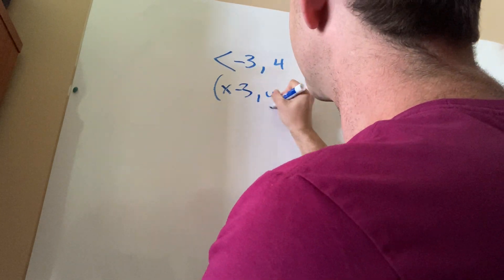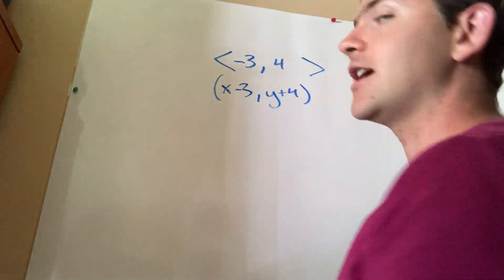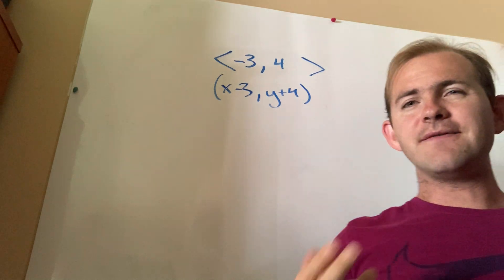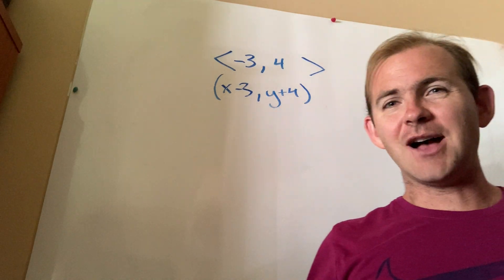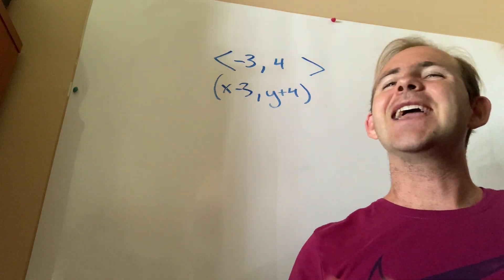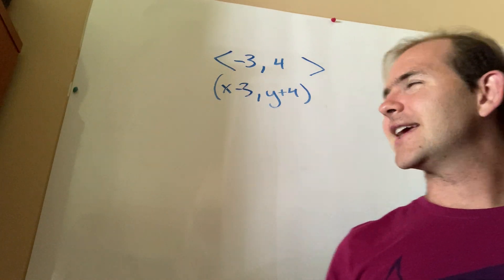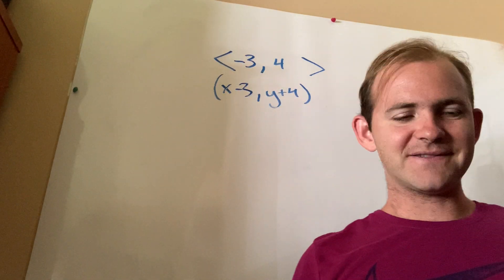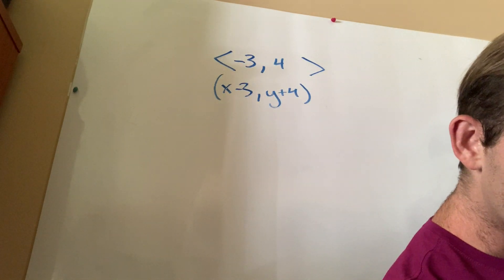You're actually doing this: X minus 3, Y plus 4. So a vector in a geometry context is really just this, just without the X and without the Y. It just tells you which direction you're moving in. So in this case, 3 units to the left and 4 units up.